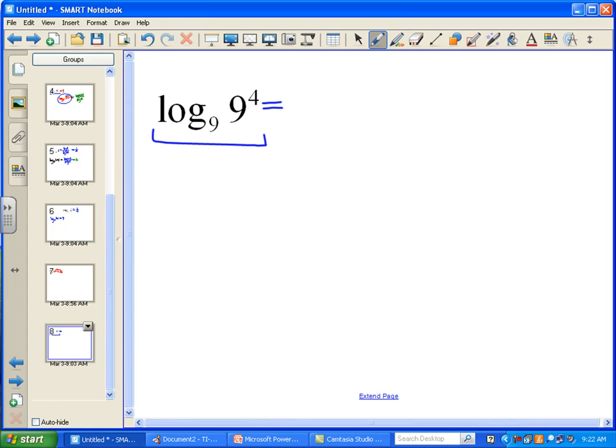This logarithm is asking a question. And the question that it's asking is, what do I raise 9 to to get 9 to the 4th? Well, you would raise this number 9, the base 9, to the 4th power to get 9 to the 4th. So that sort of makes a lot of sense, right?